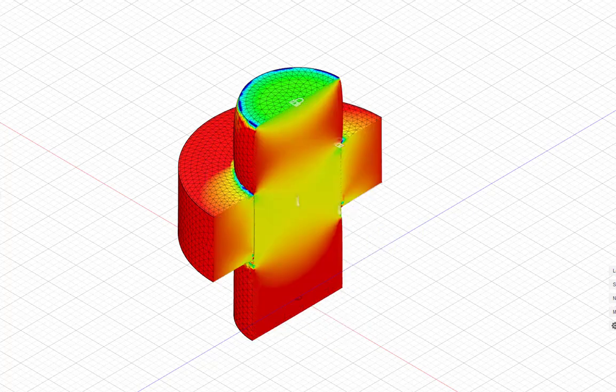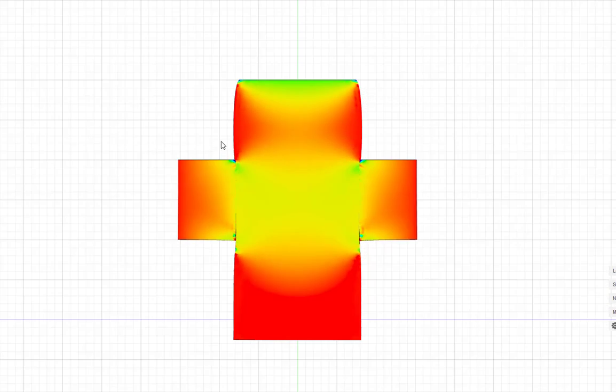And you can see that if I toggle on the slice plane, you can see that the shaft is bowing out relative to the collar. And that generates stresses at the interface between the shaft and the collar.